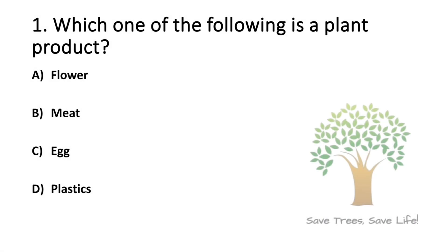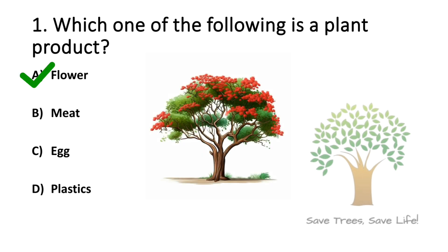Question number 1. Which one of the following is a plant product? Option A: Flower. Option B: Meat. Option C: Egg. Option D: Plastic. So the answer is option A, Flower.